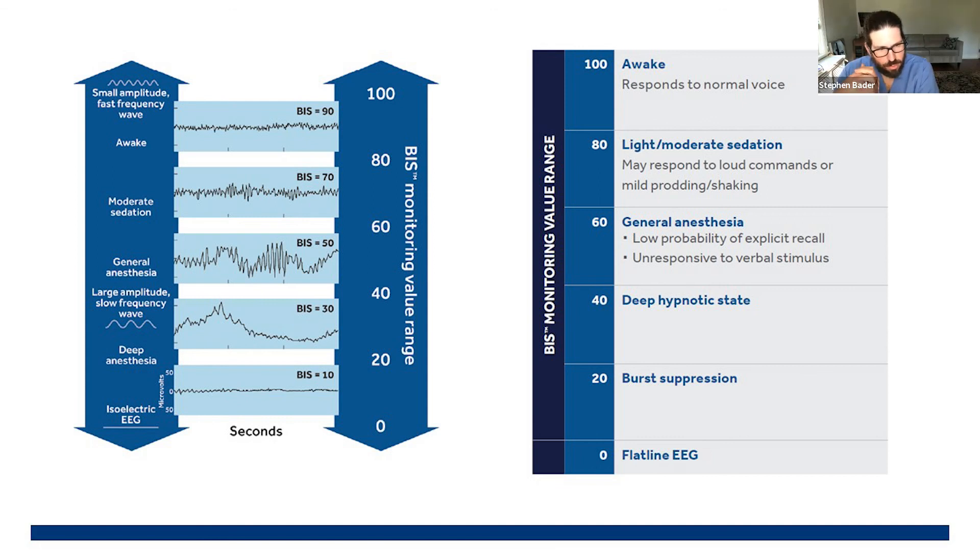Now, once you get low and slow, when you're getting really deep anesthesia, you'll start seeing larger amplitudes and very slow frequency waves. And then isoelectric, as we've discussed, is really representative of essentially no brain activity, almost a flat line.